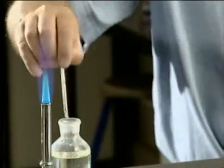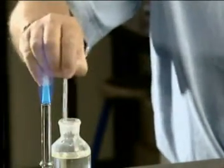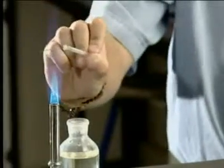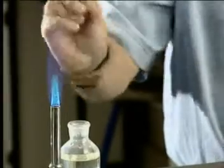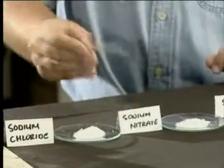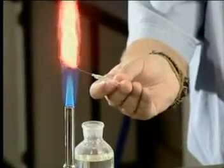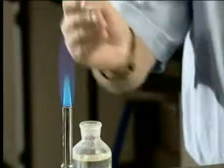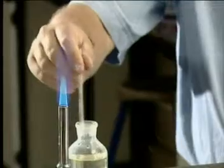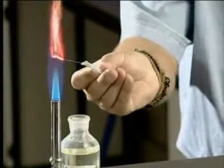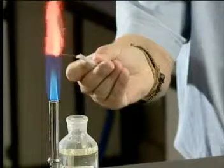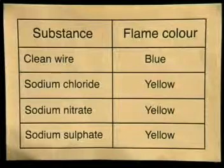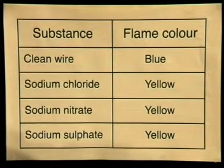Now we will test the other two sodium salts. Let's clean the wire by dipping it back into the acid to make sure that all the sodium chloride is removed before placing it in the flame. Can you see now we have a plain blue flame? Let's dip it now into sodium nitrate and hold it back in the flame. Make sure that you record all your observations. Once again, we must clean the wire so that we can test the sodium sulphate crystals. I put the sodium sulphate crystals on the wire and place it back into the flame. Again, make sure that you write down all your observations.